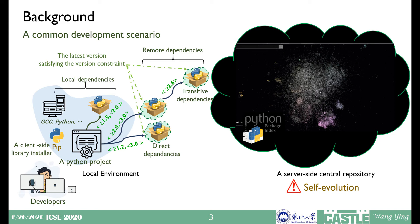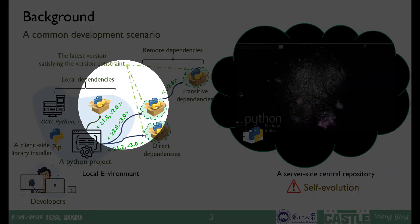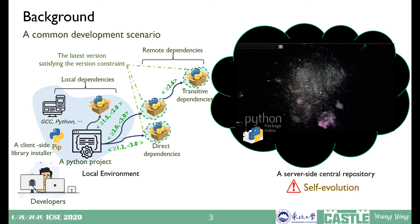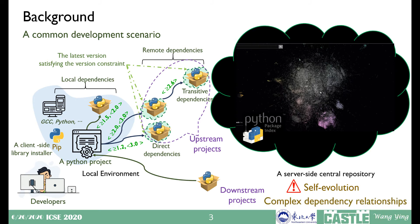As we can see, in Python projects there are two types of dependencies: local and remote dependencies. The version constraint mechanism enables automatic self-evolution of the remote dependencies. In addition, for Python projects, all its specified direct and transitive dependencies refer to upstream projects, and the projects depending on it refer to downstream projects.